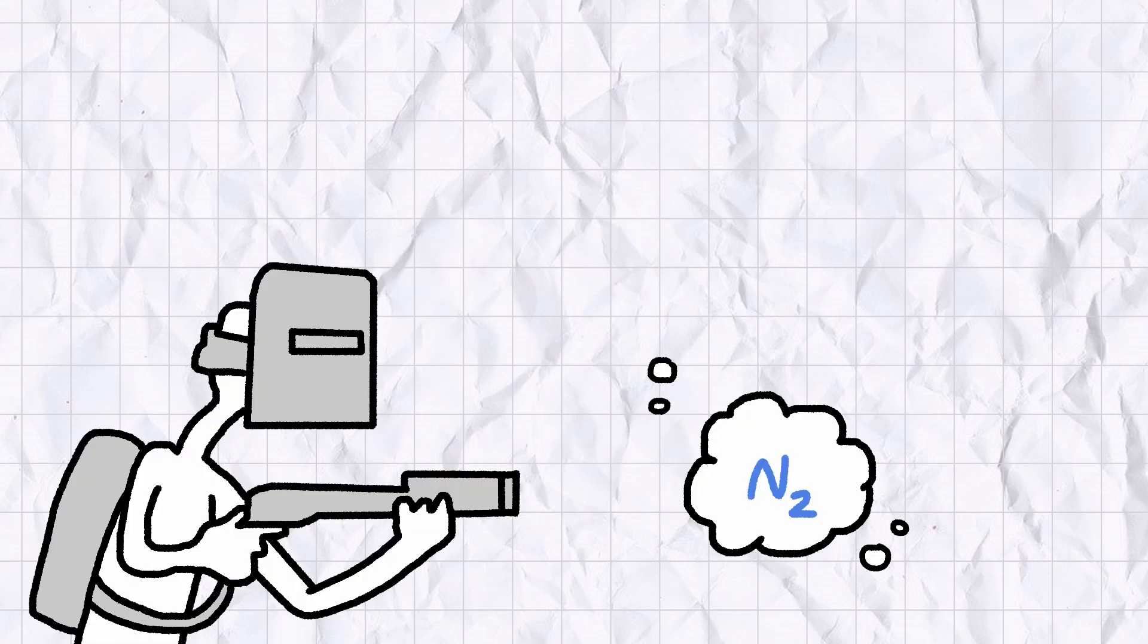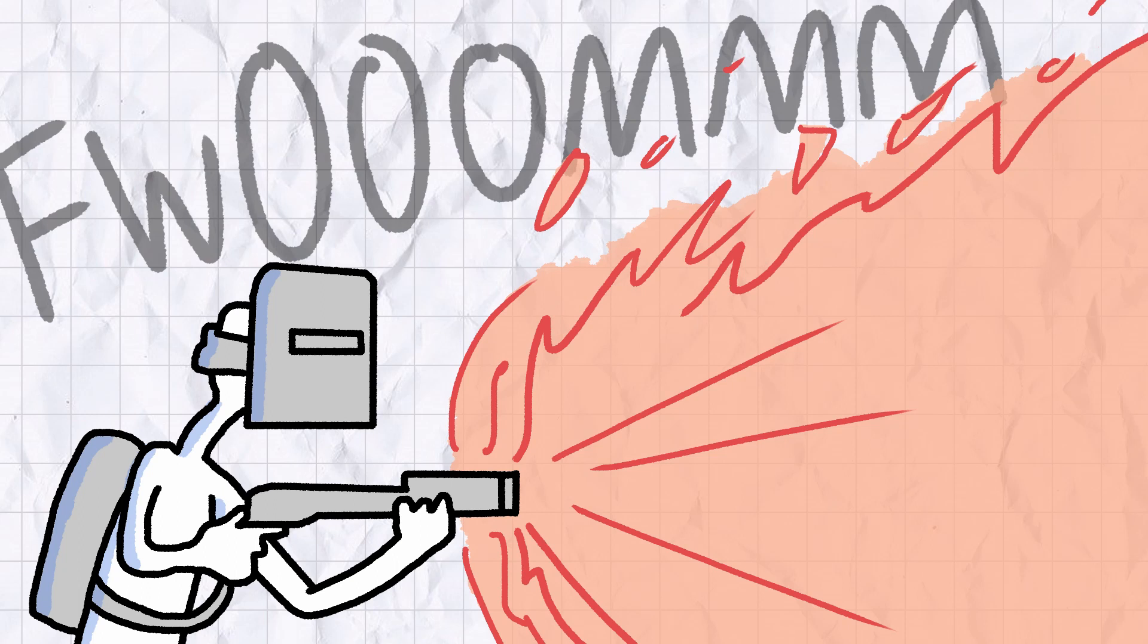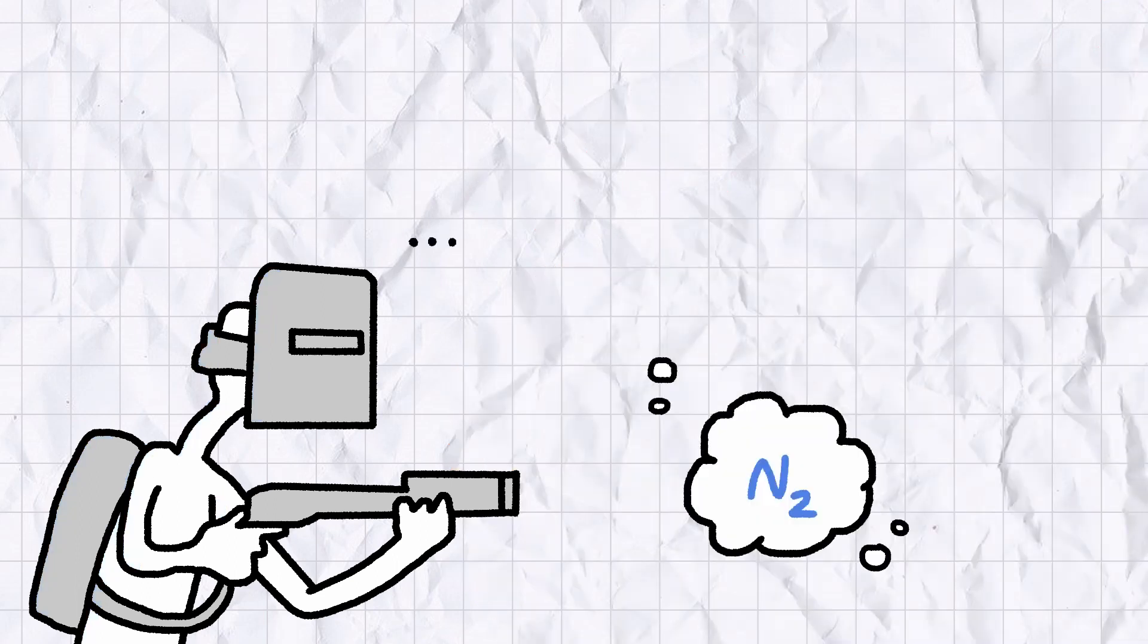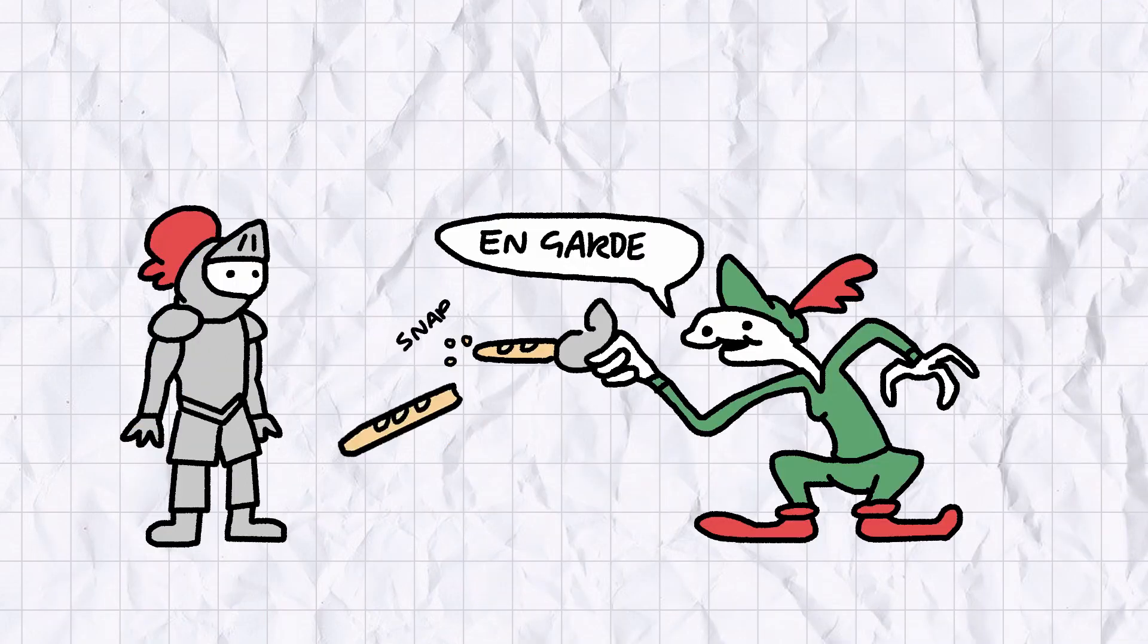Making and breaking chemical bonds is what makes a reaction a reaction. And even if you subject nitrogen gas to crazy high temperatures, that triple bond has about as much chance of breaking as a suit of armour does against a dueling sabre made out of crusty breadsticks.